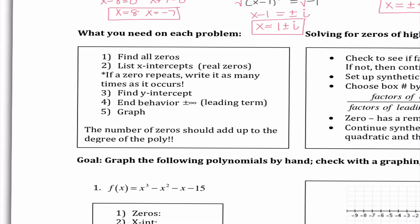The things we're going to need to find today — this should look familiar, we did this earlier this chapter — we need to find all the zeros, the x-intercepts. Remember, if we have a double zero, we need to write it multiple times. The y-intercept, which is the constant. The end behavior, and we want to graph it.